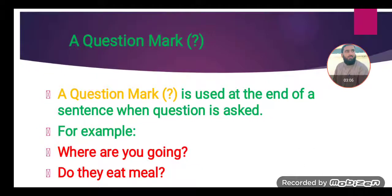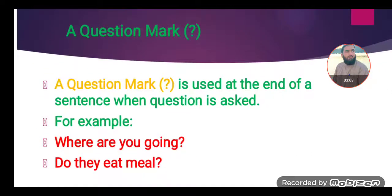Then comes another punctuation mark, a question mark. A question mark is used at the end of a sentence when a question is asked. For example, where are you going? Do they eat meal? In these sentences questions are asked, so that's why we have used a question mark or sign of interrogation.